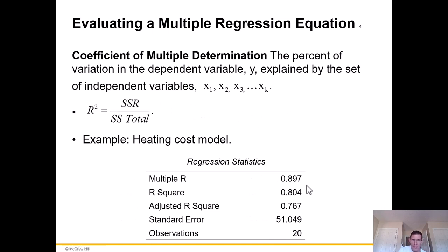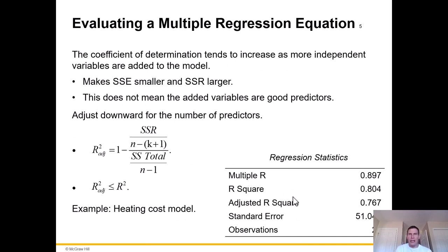The coefficient of multiple determination is the percent of variation in the dependent variable y explained by the set of independent variables — all of X1, X2 through technically infinity. R squared is the regression sum of squares over the sum of squares total. Looking at the heating cost model: adjusted R squared is 0.767 and R squared is 0.804. An R squared of 0.804 is actually a pretty good R squared. The coefficient of determination tends to increase as more independent variables are added to the model, because if they're correlated to the dependent variable, they help explain more of that variance.